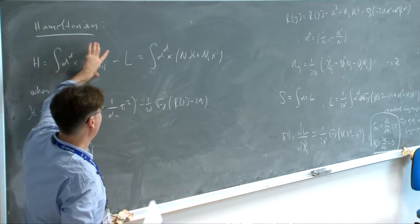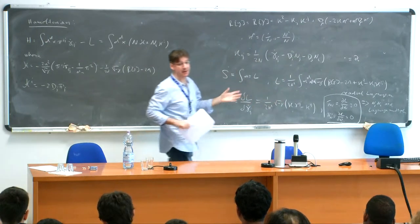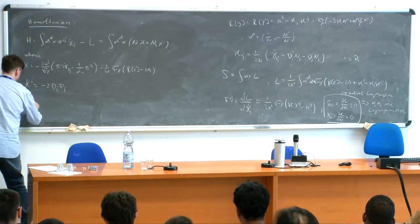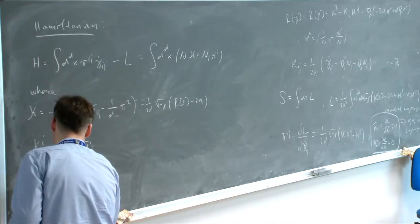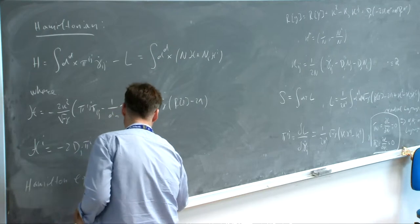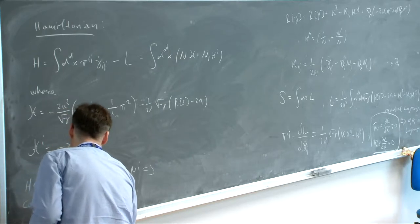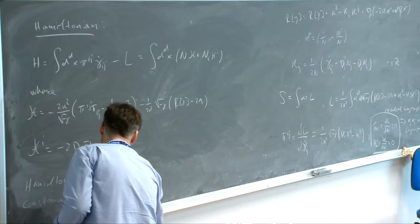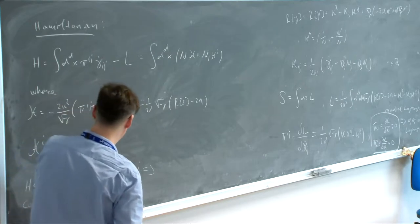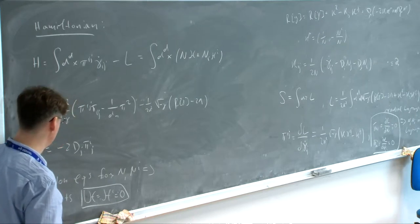Now you see that n and n_i are Lagrange multipliers, so the corresponding Hamilton equations imply that H and H_i have to vanish identically. The constraints H = 0 and H_i = 0 apply: H = 0 is the Hamiltonian constraint, and H_i = 0 is sometimes referred to as the momentum constraint.